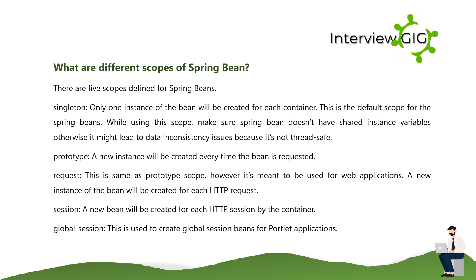What are the different scopes of a Spring bean? There are five scopes defined for Spring beans. Singleton — only one instance of the bean will be created for each container; this is the default scope. When using this scope, ensure the Spring bean doesn't have shared instance variables, as it is not thread-safe. Prototype — a new instance will be created every time the bean is requested.